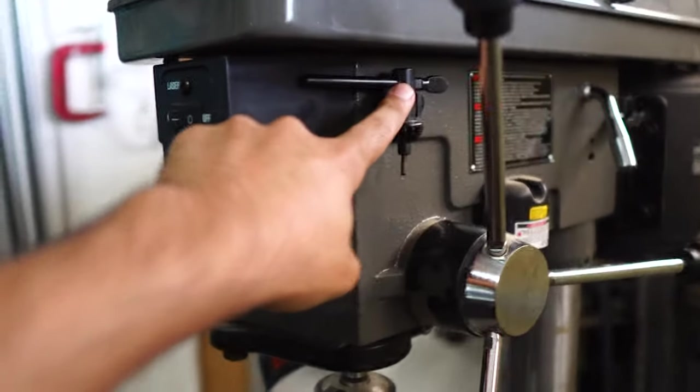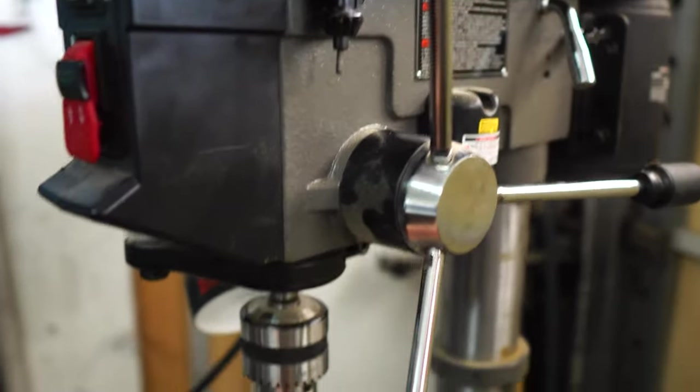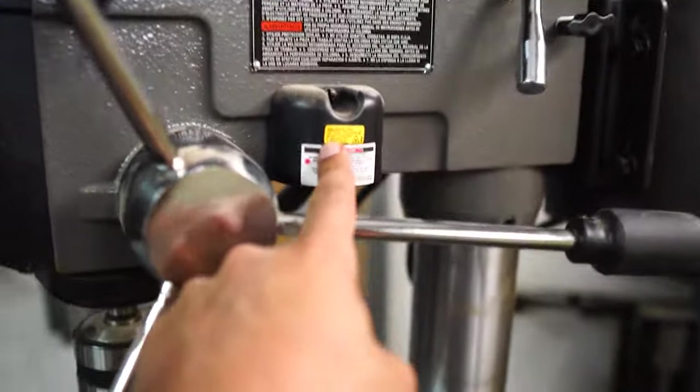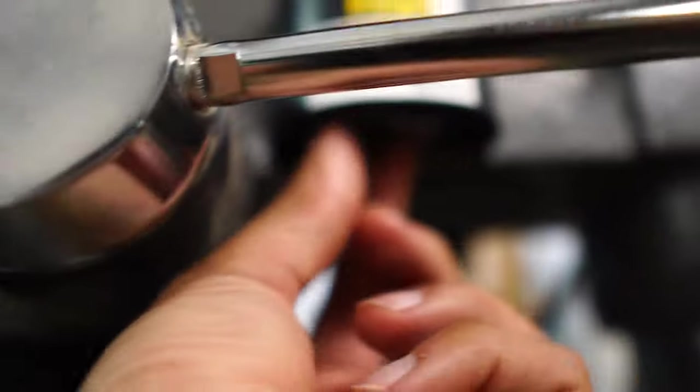It does have a key chuck holder that's going to be used for changing the bits, which I'll show you in a bit. And here is one of the laser guides. It's going to be hard to see, but you can adjust both lasers, and you want to do that every time the table moves.